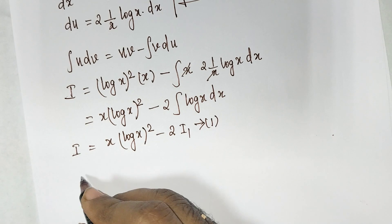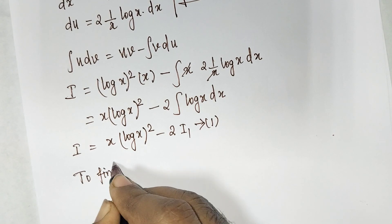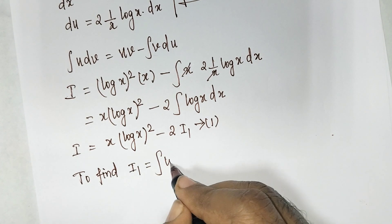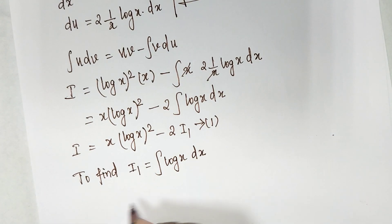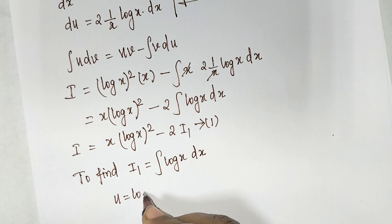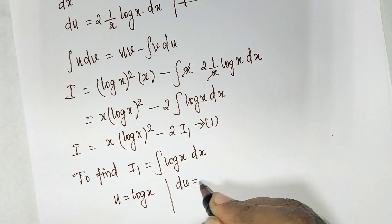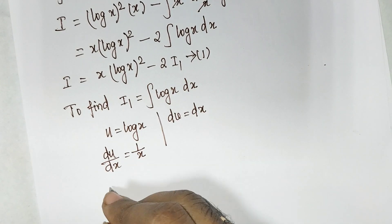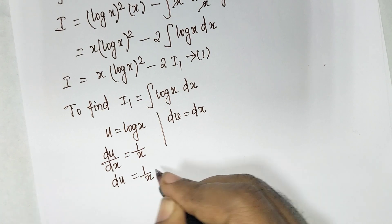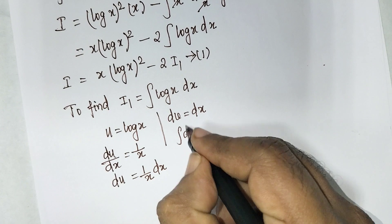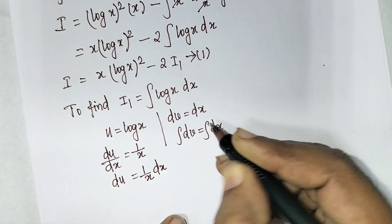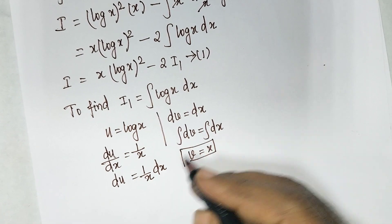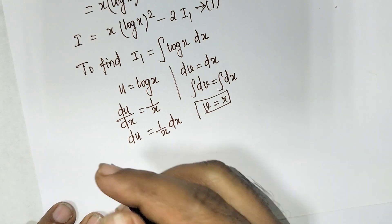To find I1: I1 equals integral of log(x)·dx. Apply integration by parts again. Take u equal to log(x), dv equal to dx. Then du/dx equals 1/x, so du equals (1/x)·dx. Integrating dv gives v equals x.